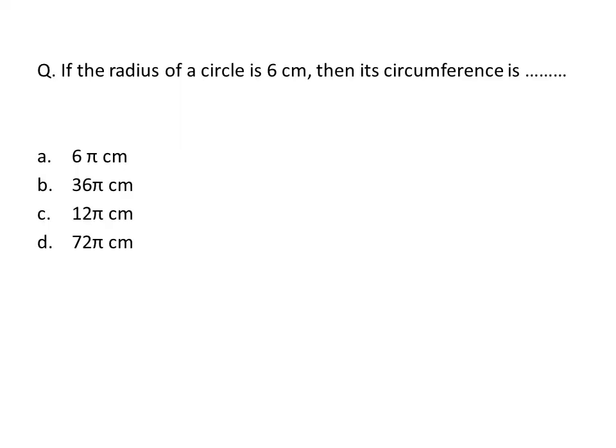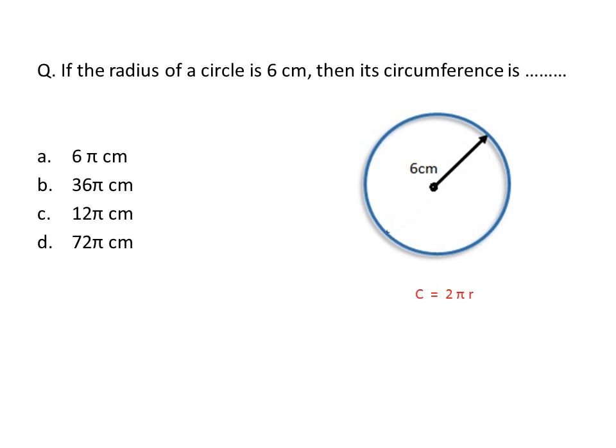Final question: if the radius of a circle is 6 centimeters, then its circumference is? We use the circumference formula: C = 2πr. Substituting radius = 6 centimeters: C = 2 × π × 6 = 12π centimeters. Option C is correct.